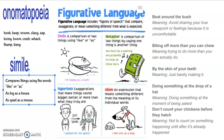There are different types of figurative language. The first type that we're going to talk about is simile. In a simile, you use the words 'like' or 'as.'